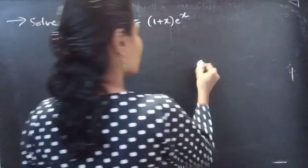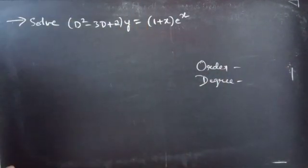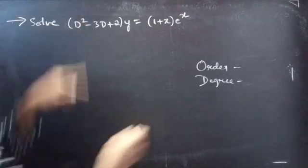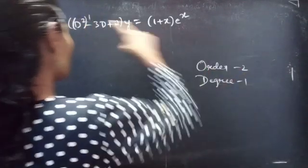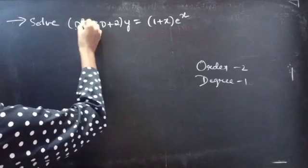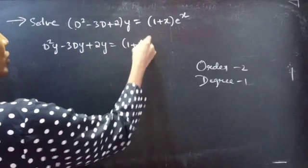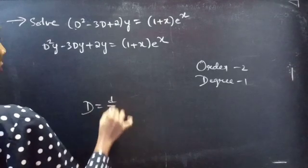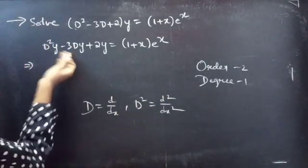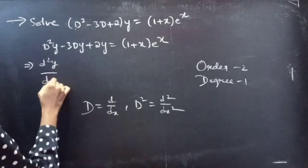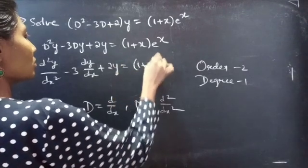Firstly, let's find the order and degree of the given differential equation. Identify the highest derivative — here D² is the highest derivative, so our order will be 2. The highest power of the highest derivative is the degree, so degree is 1. We can write D² as d²y/dx², giving us d²y/dx² - 3·dy/dx + 2y = (1 + x)eˣ.